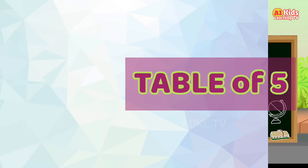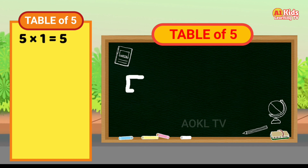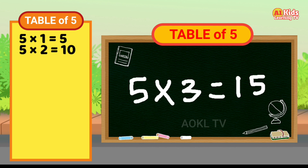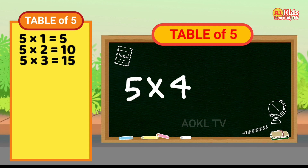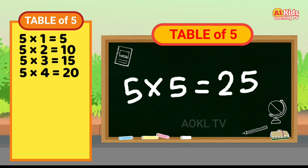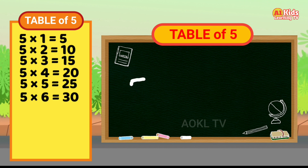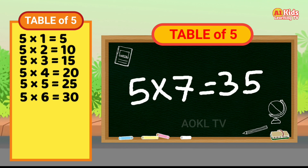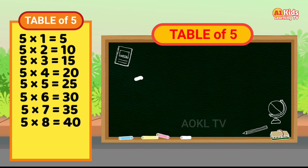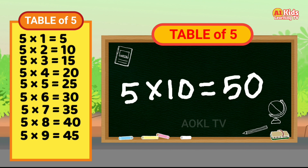Table of five. Five one's are five. Five two's are ten. Five three's are fifteen. Five four's are twenty. Five five's are twenty-five. Five six's are thirty. Five seven's are thirty-five. Five eight's are forty. Five nine's are forty-five. Five ten's are fifty.